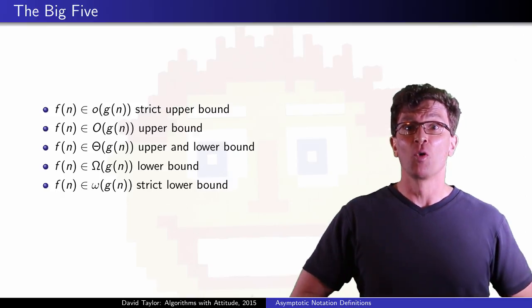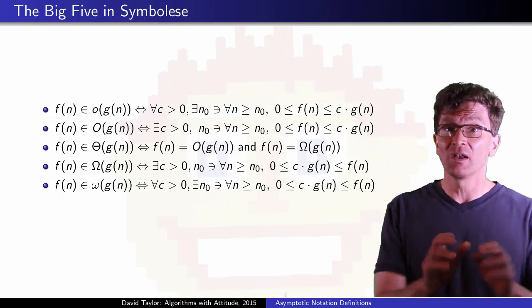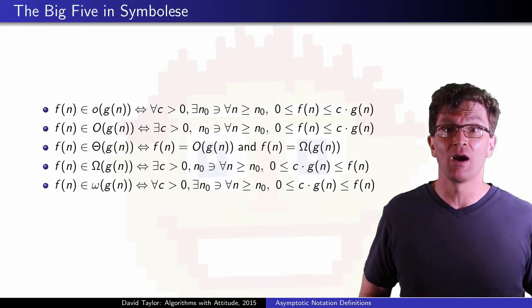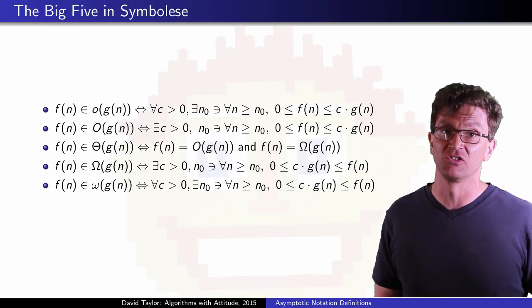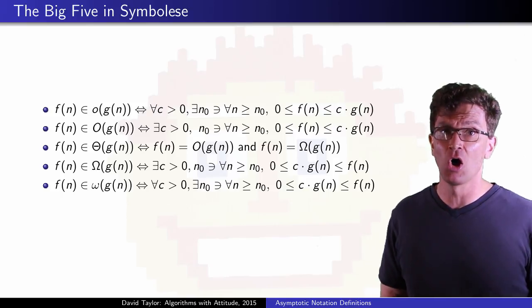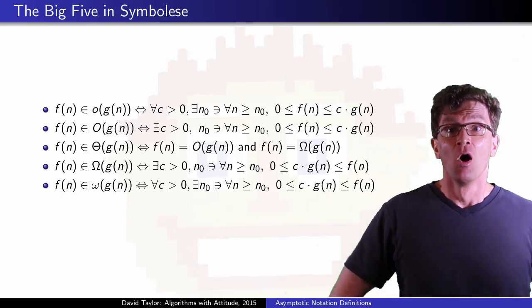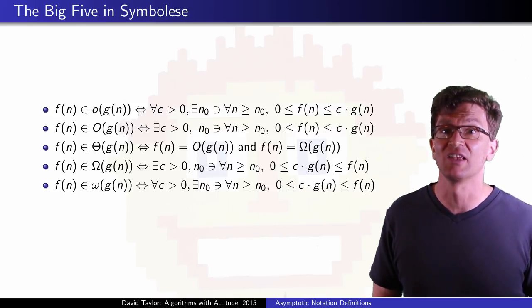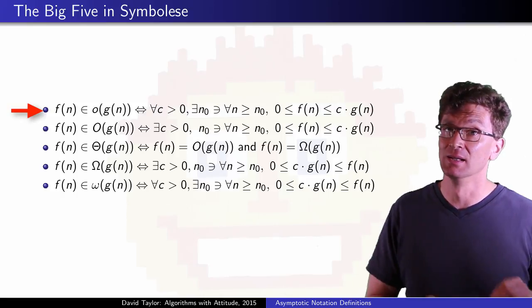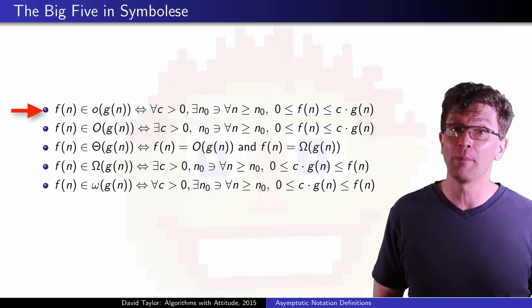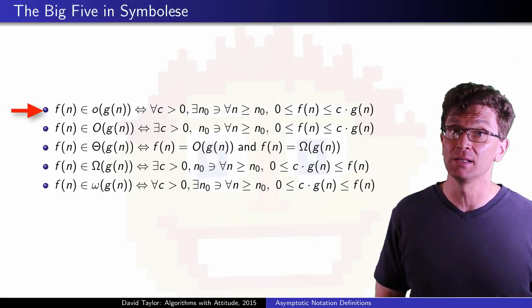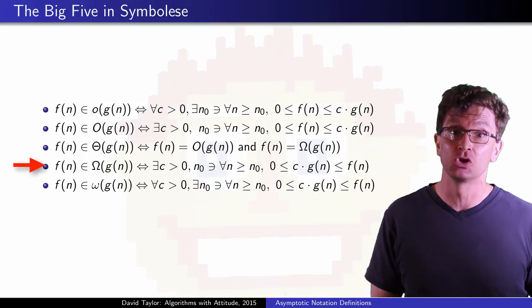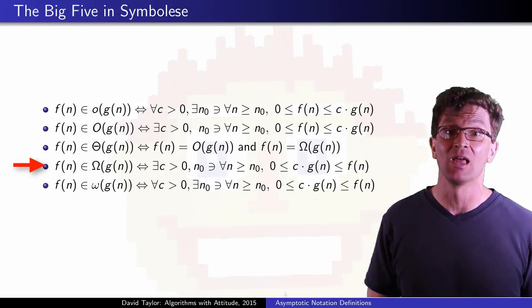To define these more formally, I am going back to symbolese. We have already seen the first two. The last two are symmetric to them, except lower bound, so there, f(n) ≥ c·g(n), instead of less than it. The little o and big omega cases are where it is especially important to remember that c can be a value less than 1. If you forget that, in the little o case, your proof will probably be wrong or incomplete, and in the big omega case, you might not be able to get your proof to go through at all, unless you choose c less than 1.